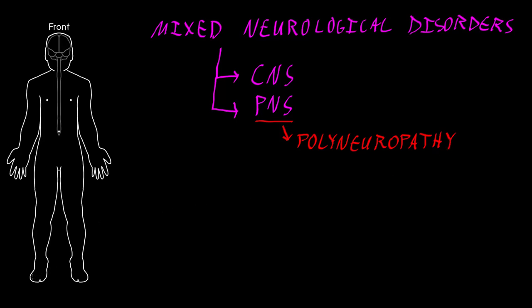What we often see are bilateral abnormalities starting at the toes, involving the lower neural functions of sensory, motor, and autonomic functions. As they progress, they can move farther up the legs, and often when they get toward the knees, they start to involve the hands as well. So we can get this fairly typical polyneuropathy pattern. This can occur alone, or it will often precede involvement of the central nervous system.